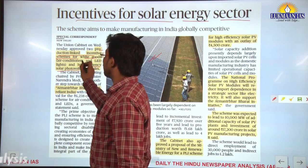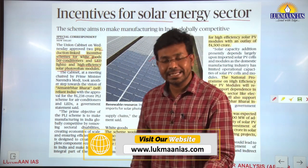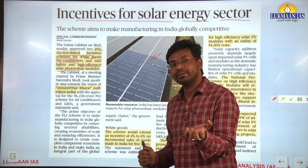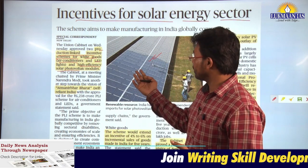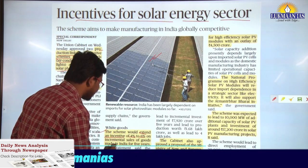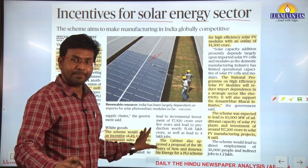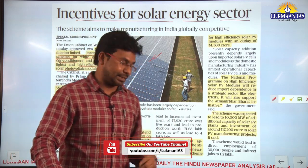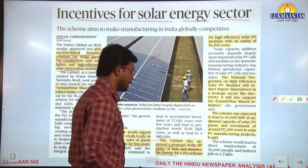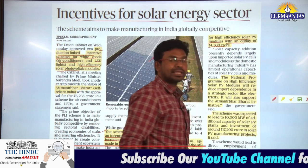One scheme is related to white goods like air conditioners and LED lights, and the other is for high efficiency solar photovoltaic modules. This is in line with the Atmanirbhar Bharat initiative — giving incentives for production of solar panels in India. The scheme extends an incentive of 4 to 6% on incremental sales of goods made in India for 5 years. The cabinet also approved a proposal from the Ministry of New and Renewable Energy for a PLI scheme for high efficiency solar PV modules with an outlay of ₹4,500 crores.